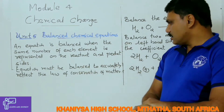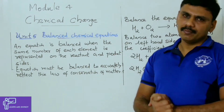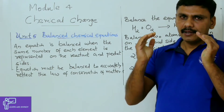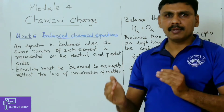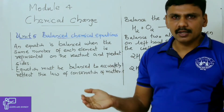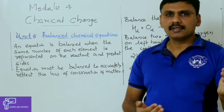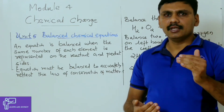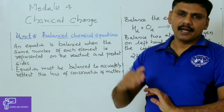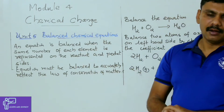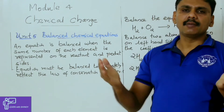Equations must be balanced to accurately reflect the law of conservation of matter. If the chemical equation is balanced, that means the number of elements on both sides are equal. That shows the conservation of mass — the total mass of the elements in the reactant side and the total mass of the elements in the product side become equal.